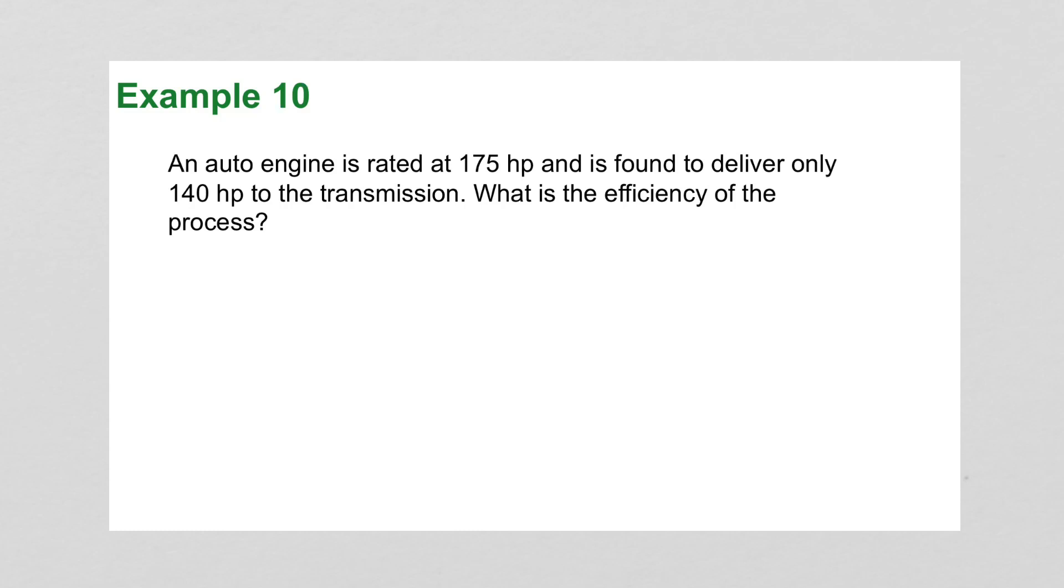Our example: an auto engine is rated at 175 horsepower and is found to deliver only 140 horsepower to the transmission. What is the efficiency of this process? We'll take the output which was 140 over the input 175, and that's going to tell us our efficiency. Cross multiply, we'll have 175E equals 14,000. Divide 14,000 by 175 and the efficiency of this engine is at 80%.